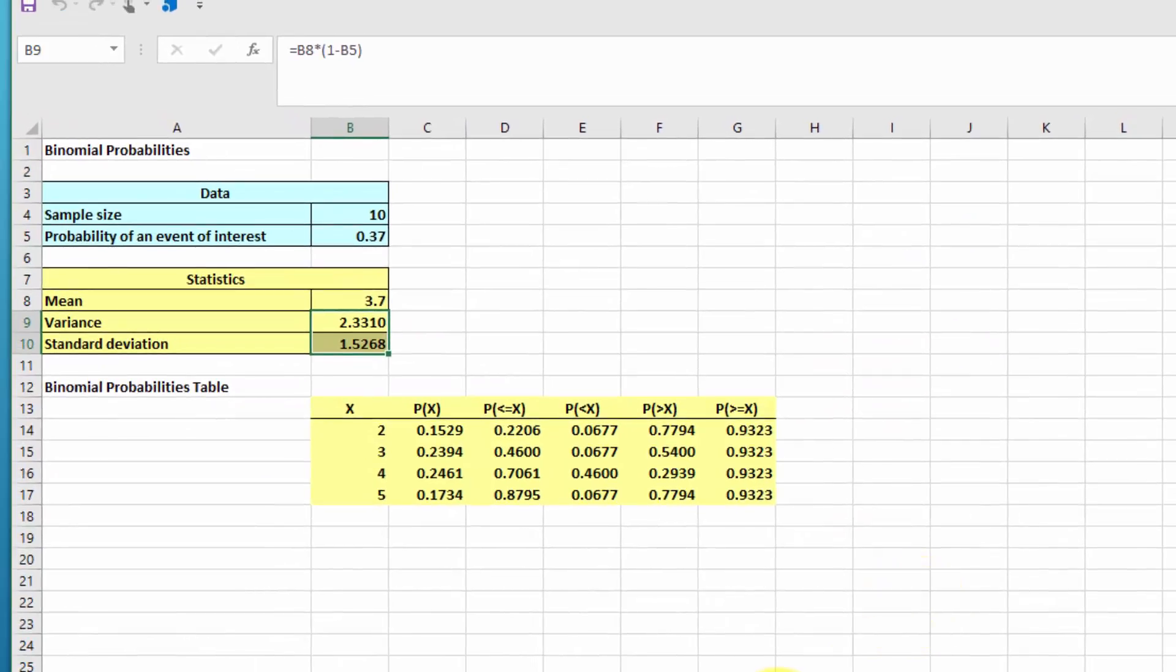And we get this worksheet added to our workbook. It summarizes again in blue the input data. We had a sample size of 10, probability of 0.37. It gives us the mean, variance, and standard deviation for the binomial in case you have a problem that asks those.